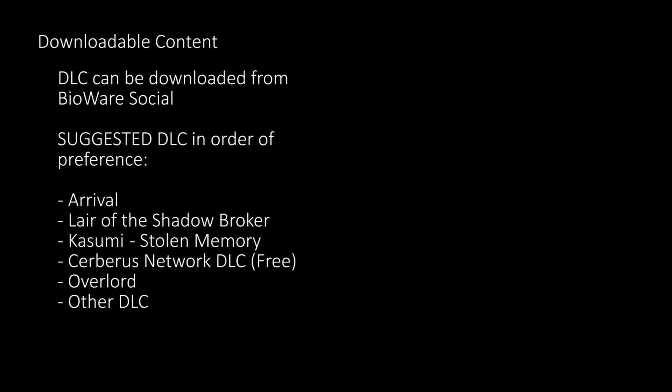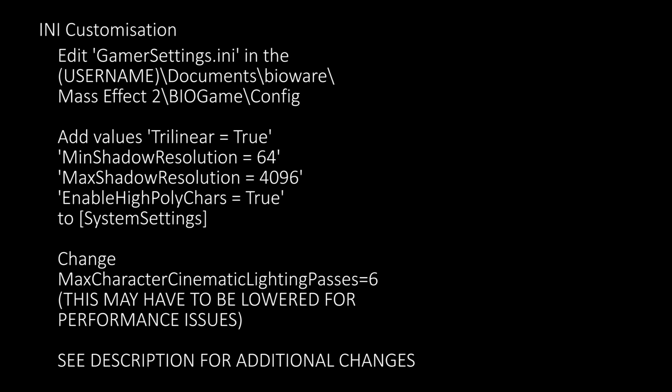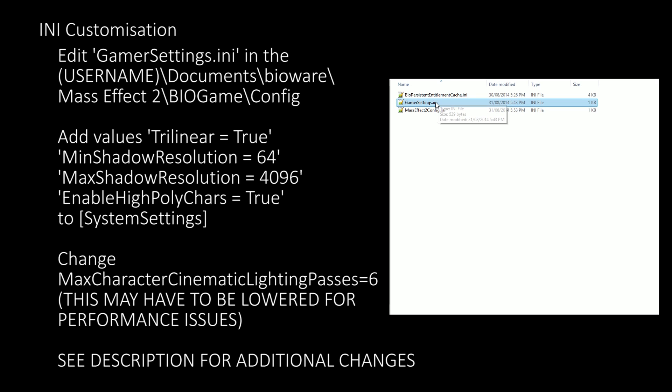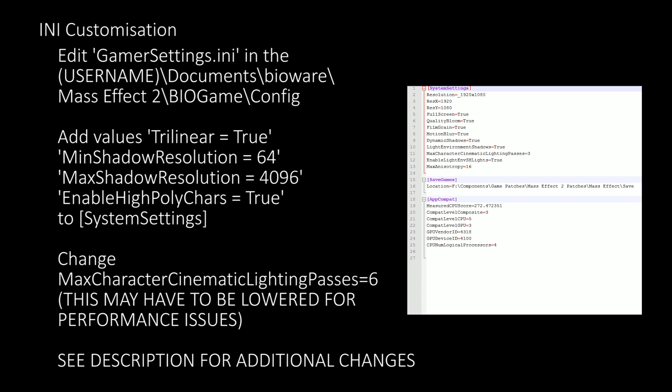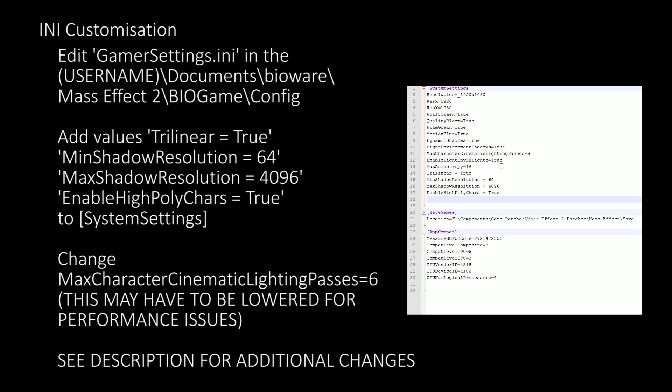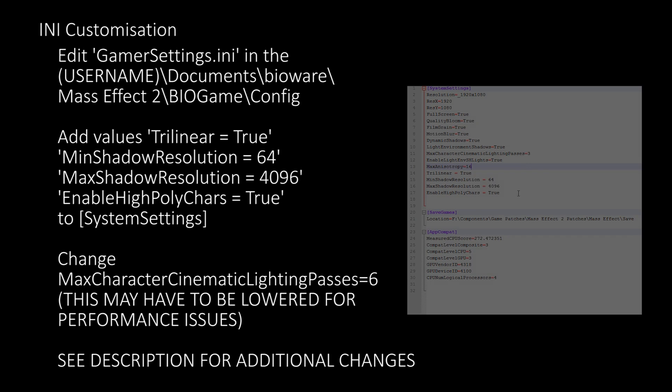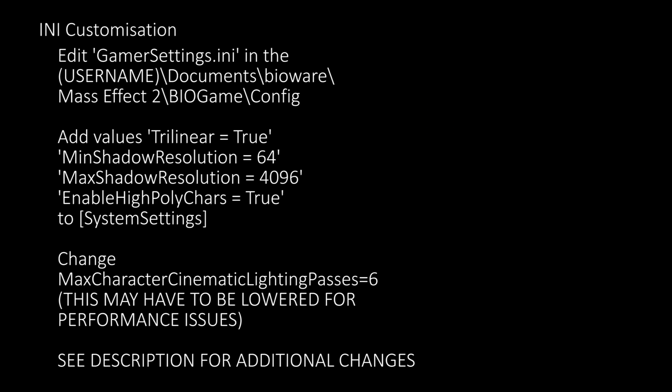At this point the base game is installed. This next section will cover any modification. The main GamerSettings.ini file can be found under your username directory in Documents, Bioware, Mass Effect 2, Biogame and Config. Once here, add the values: Trilinear equals True, Min Shadow Resolution equals 64, Max Shadow Resolution equals 4096, and Enable High Poly Characters equals True.